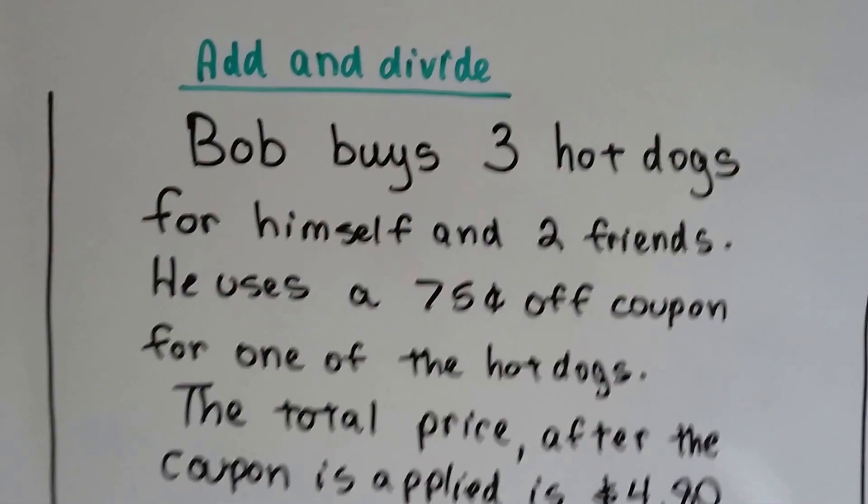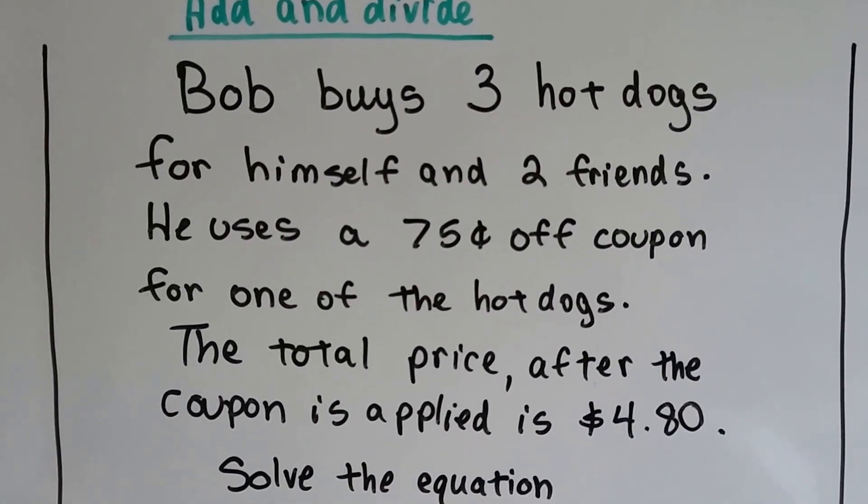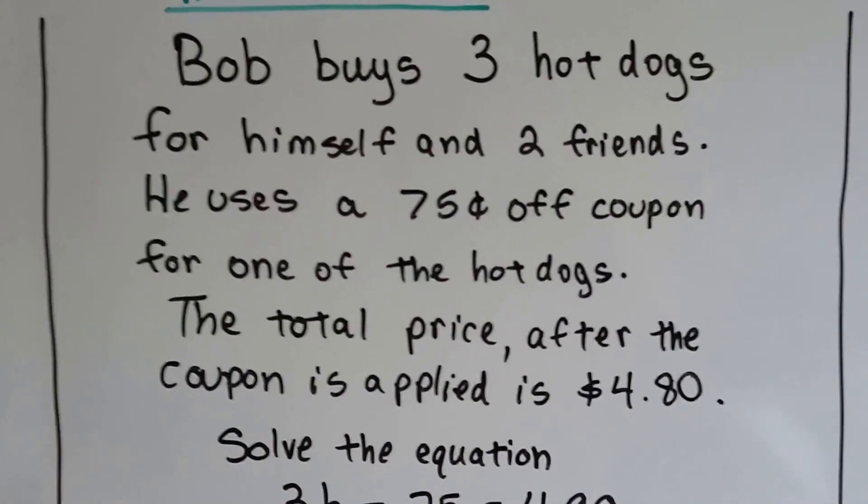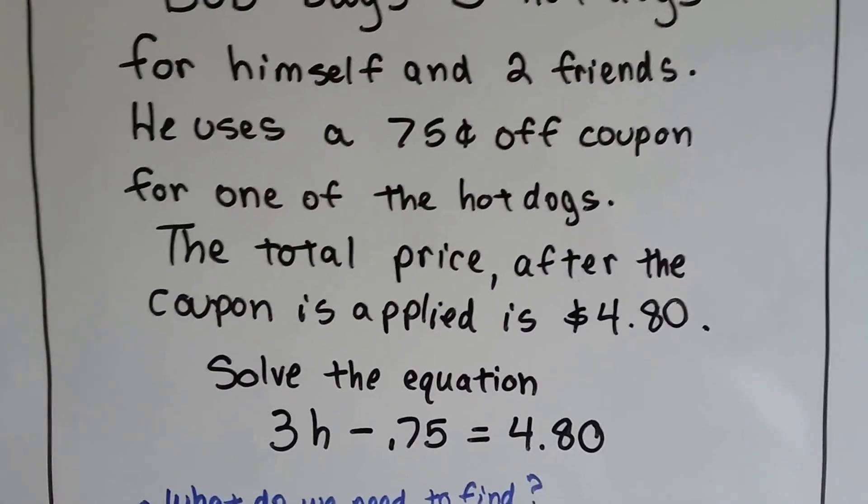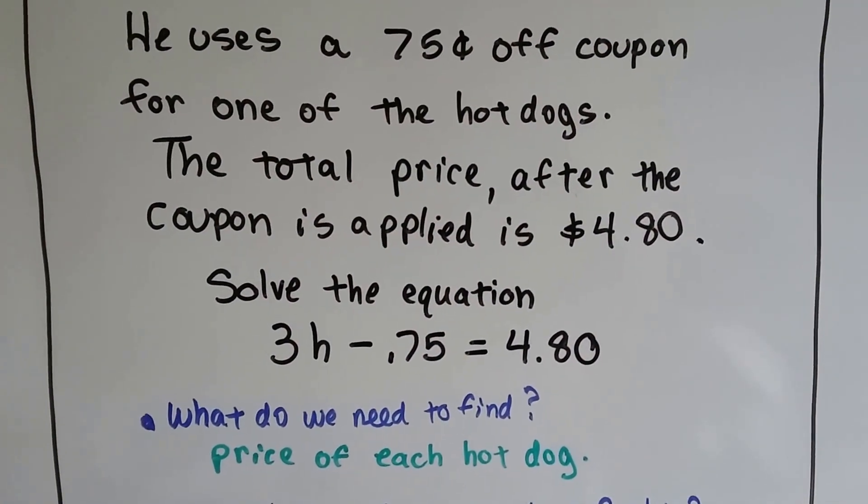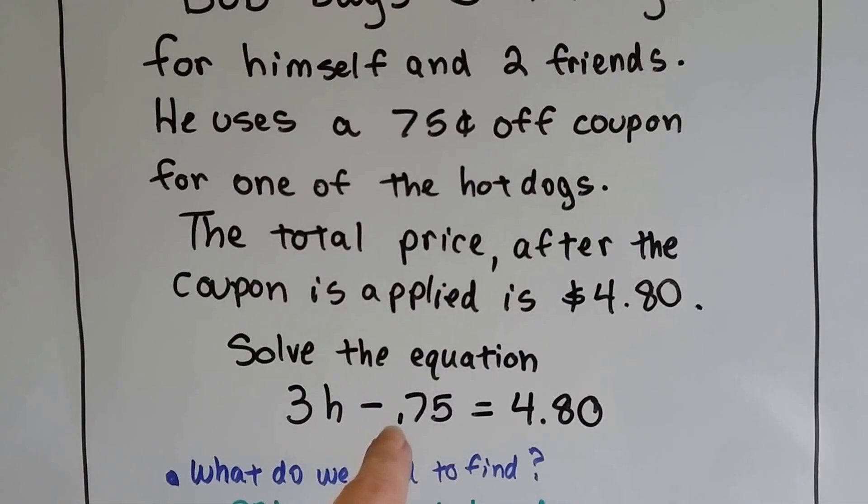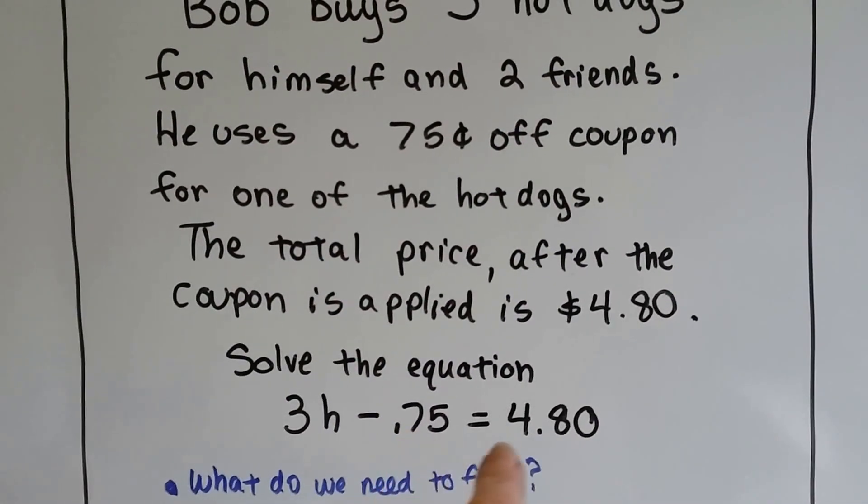That wasn't that bad, was it? Alright, here's adding and dividing. Bob buys 3 hot dogs for himself and 2 friends. He uses a $0.75 off coupon for one of the hot dogs. The total price after the coupon is applied is $4.80. So here's the equation. 3H for hot dogs minus the $0.75 coupon was $4.80.